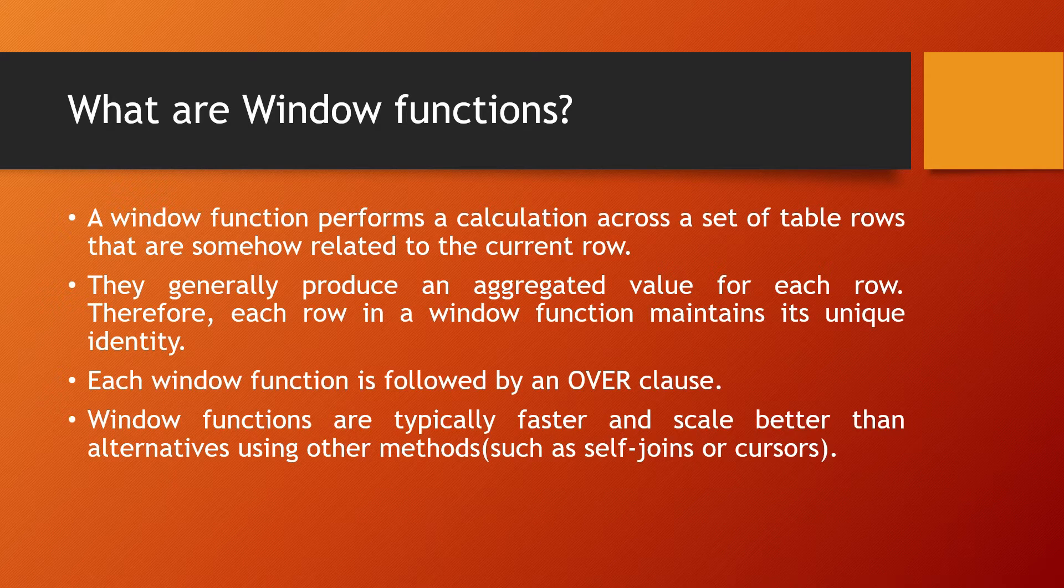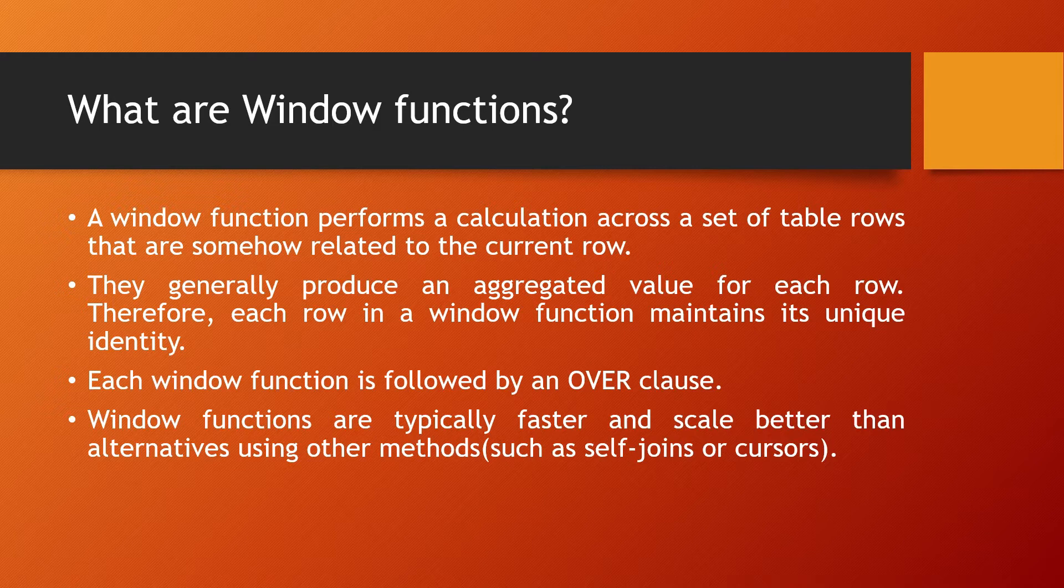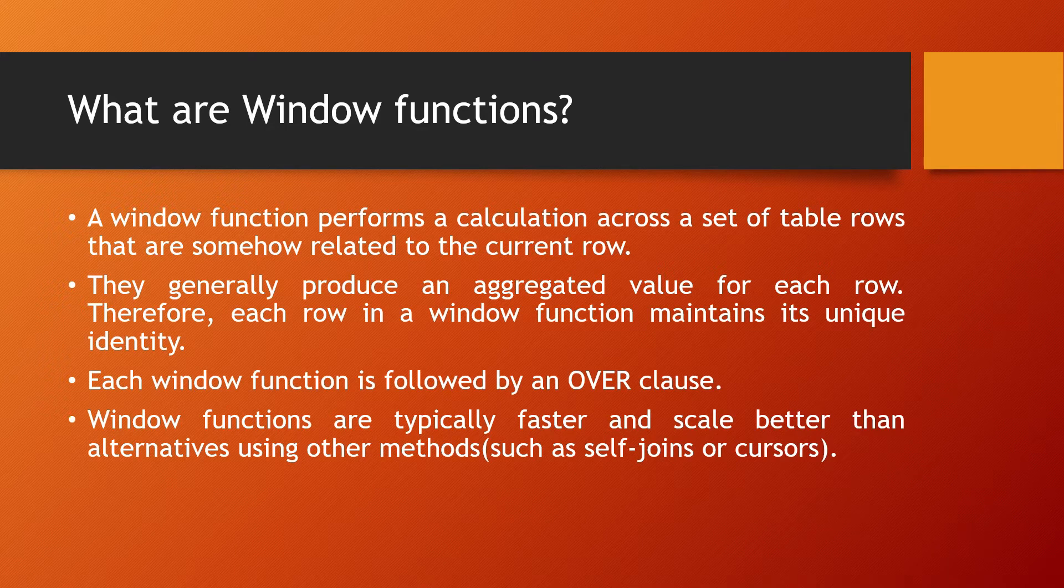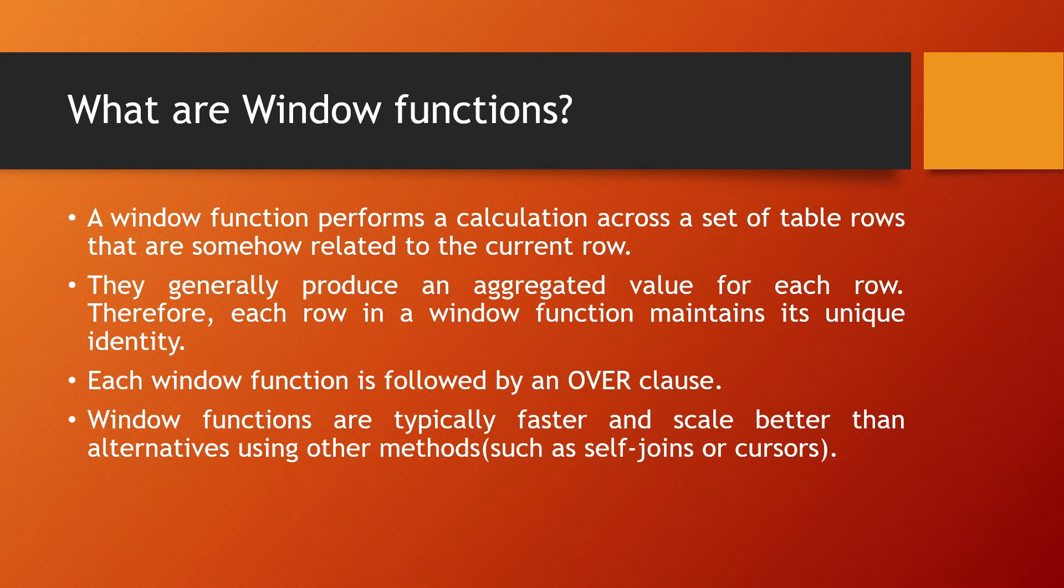What are window functions? A window function performs a calculation across a set of table rows that are somehow related to the current row. In simple words, it just performs a calculation across a set of table rows. They generally produce an aggregate value for each row. Therefore, each row in a window function maintains its unique identity.